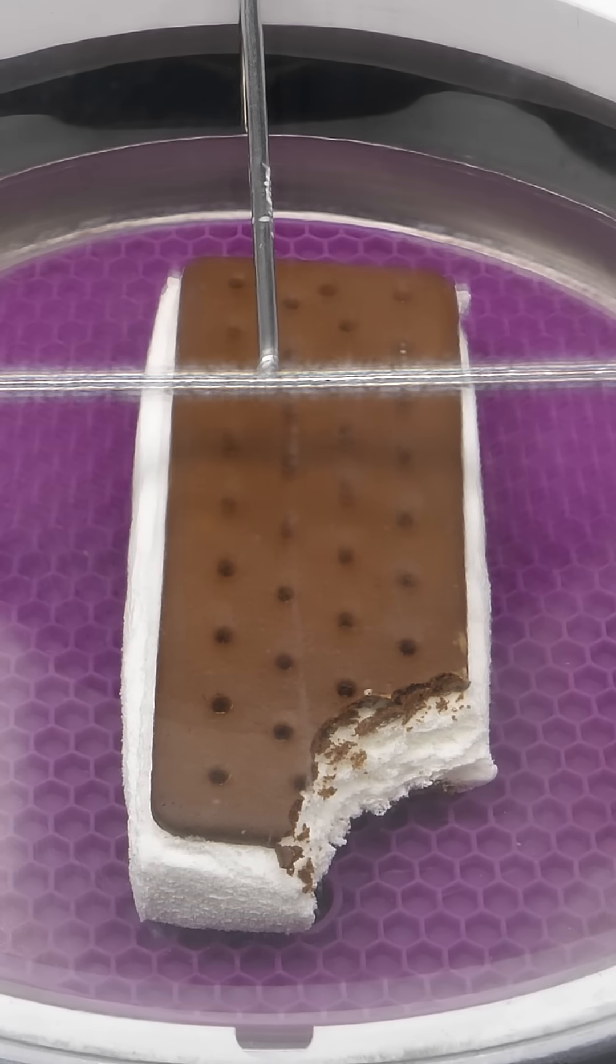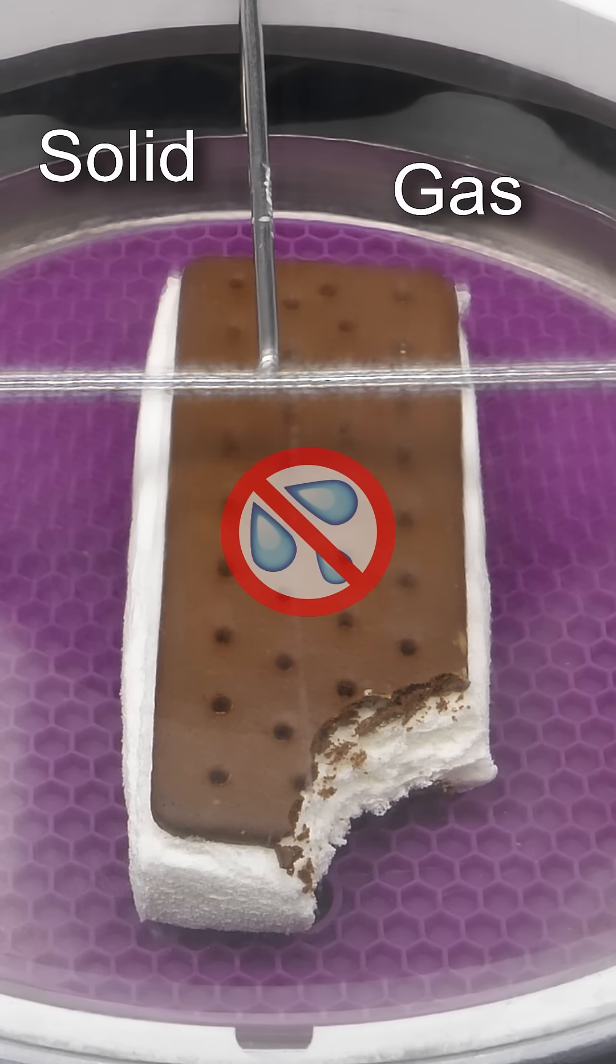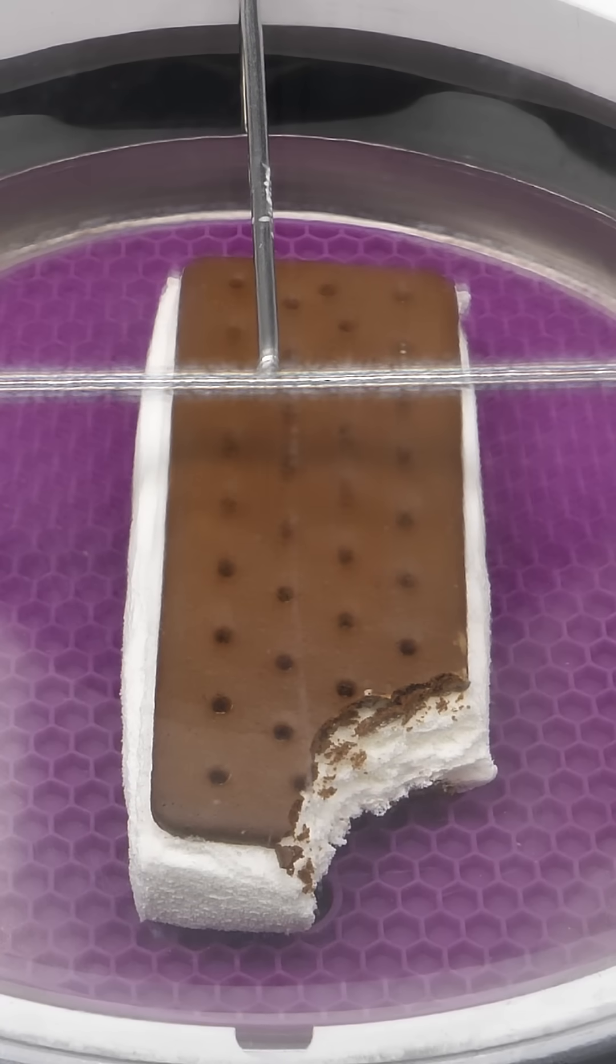Under the strong vacuum, it was no longer possible for liquid water to exist, and it could only either be a solid or a gas. So, all the water in the sandwich, which was ice, was turning directly into vapor, without ever melting or becoming a liquid.